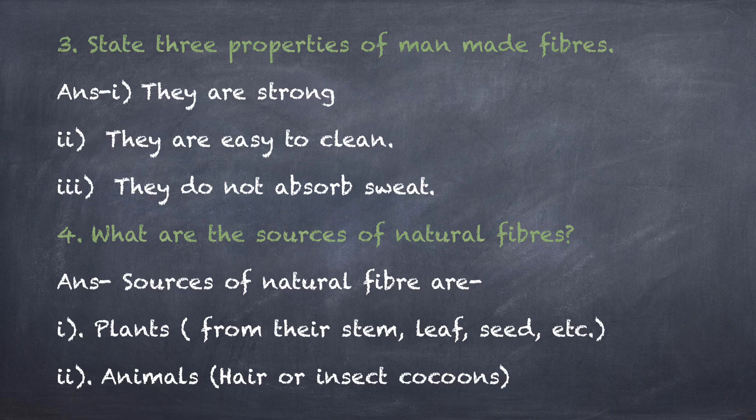Question number four: what are the sources of natural fiber? There are two sources of natural fibers. The first one is plants — from their stem, leaves, seed, etc., we get plant fibers. The second one is animals — hair or insect cocoon provide animal fibers.